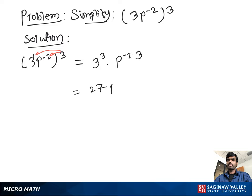Then we get 3 cubed, which is 27, and p to the negative 6. To make the power of p positive, we move p to the bottom, so we write 27 over p to the 6.